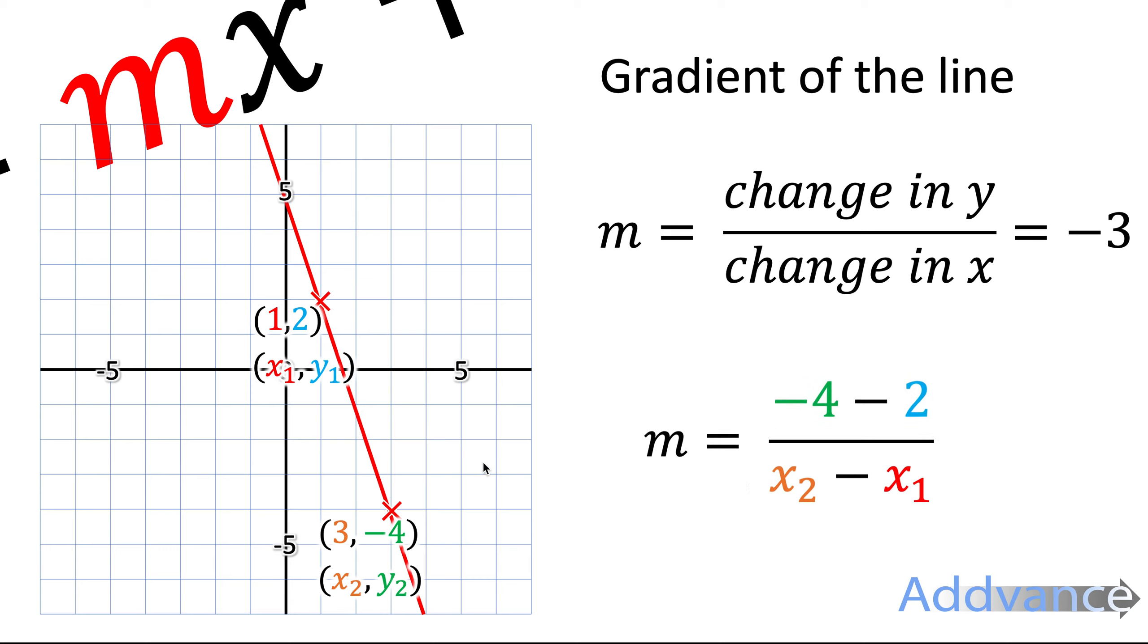We substitute those numbers in, the y2 minus y1 is minus 4 minus 2. x2 minus x1 is 3 minus 1, and we substitute those numbers in, like that.